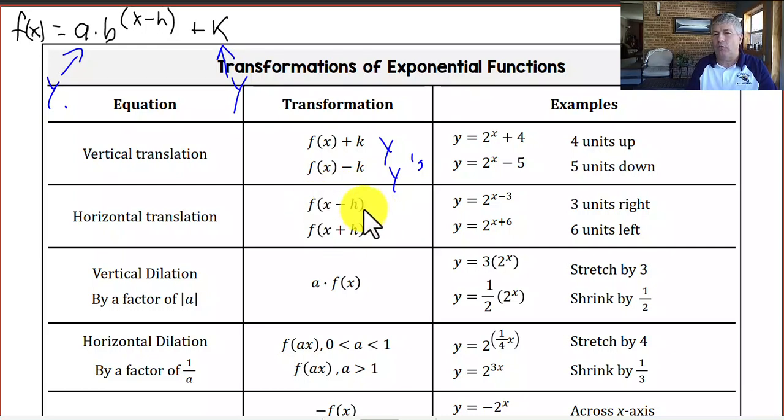However, in the x's, it's always the opposite, isn't it? So x minus h is x minus a positive h, that would move us 3 units to the right. And f of x plus h, that's going to be like x minus a negative 6, and that's going to move us 6 units to the left. So those are horizontal translations.